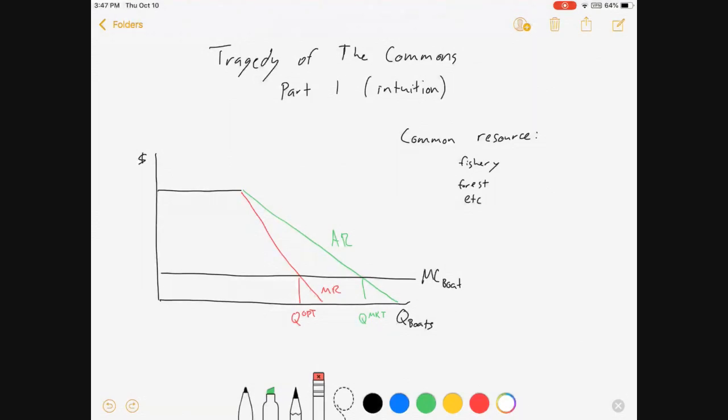And so, what do we do about it? We can issue a certain number of permits to go fishing, maybe equal to Q optimal, or we could put a tax on boats. What would that look like? I would want to find the average revenue at the optimal quantity, and I would want to set a tax equal to the gap between average revenue and the marginal cost. That gap will have the effect of making the individual boats take the marginal revenue into account. If I set a tax equal to that gap, or a fee per boat, that should lead us to this optimal quantity.